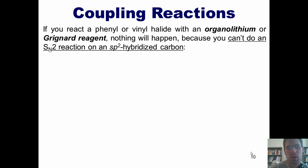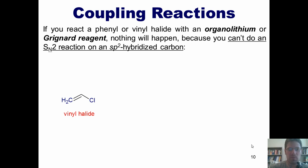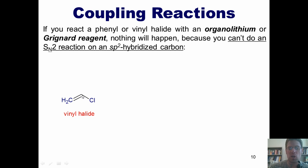In this lecture video, I'm going to start teaching you about coupling reactions. If I've got this type of molecule, this is called a vinyl halide — it's where I've got a halogen, in this case a chlorine, coming directly off of one of the two carbons in a double bond.